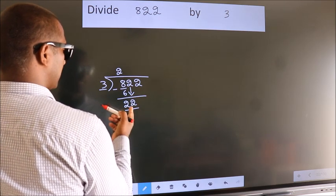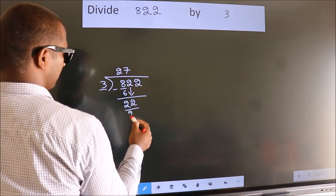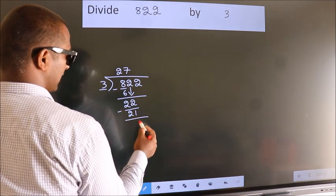A number close to 22 in 3 table is 3 7s, 21. Now, we subtract. We get 1.